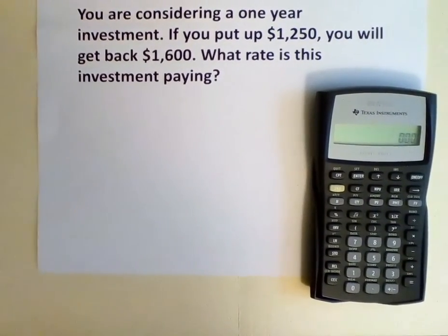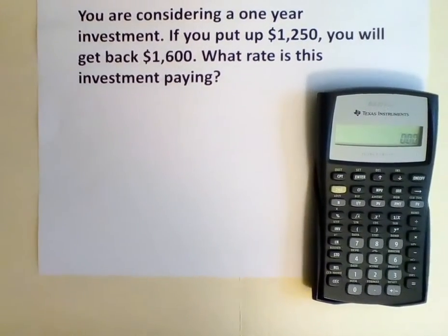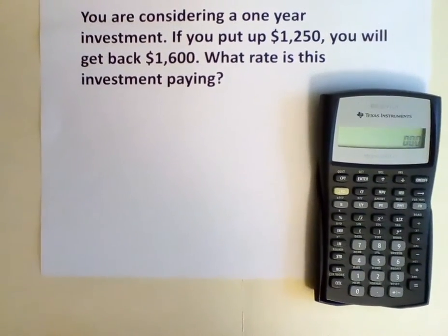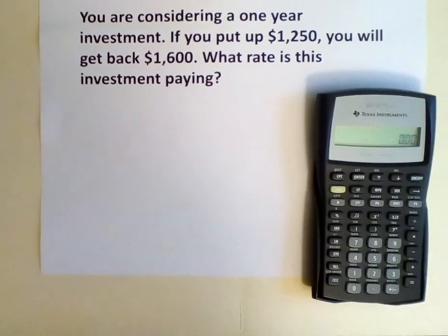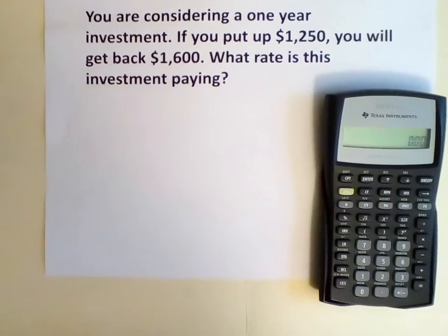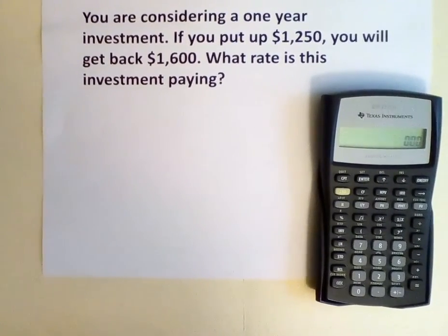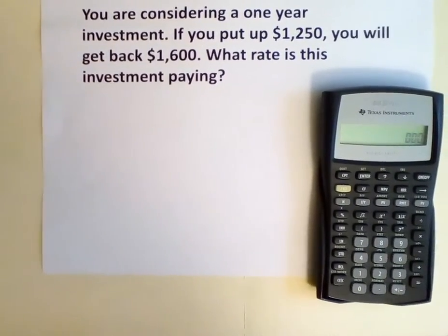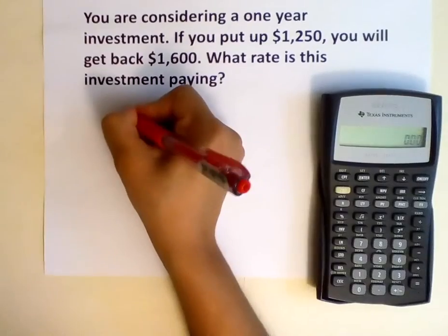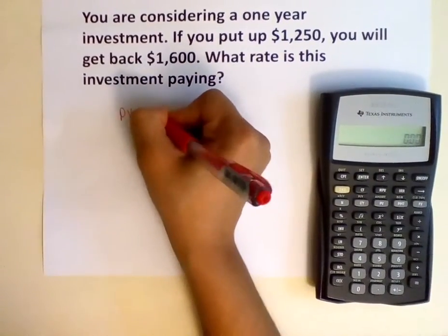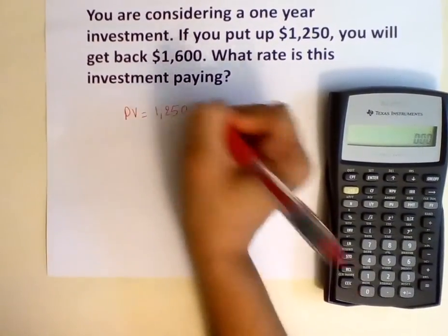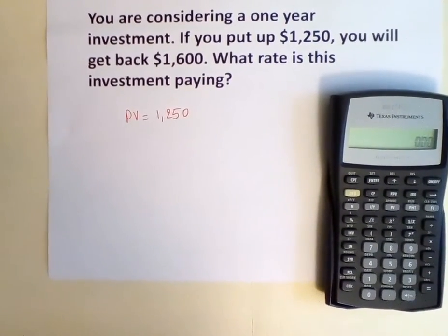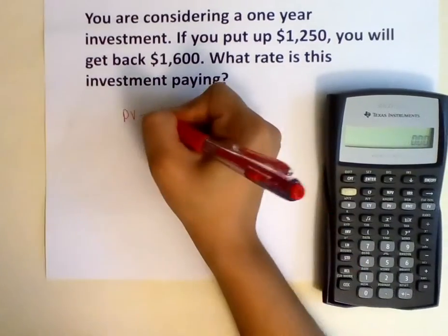You're considering a one-year investment. If you put up $1,250, you will get back $1,600. What rate is this investment paying? So $1,250 is how much we are investing today, so our PV would be $1,250. By giving that this is a cash outflow, we will input it into the financial calculator as a negative number.